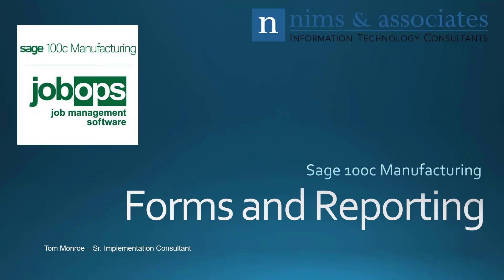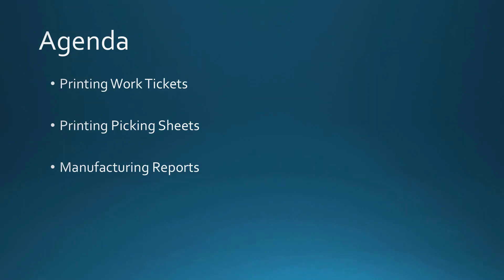Thank you for joining us today. I'd like to continue our topics in Sage 100c manufacturing. Today I'd like to talk about forms and reporting. Our agenda is pretty simple: we're going to talk about how to print work tickets, printing picking sheets, and some of the reports that you may look at in Sage 100c manufacturing.